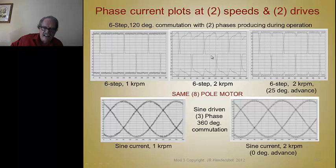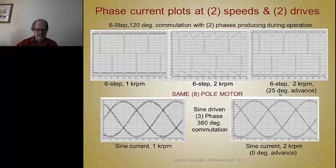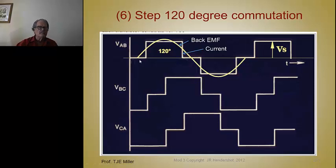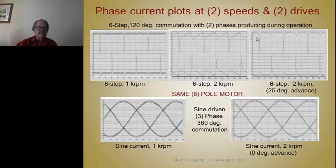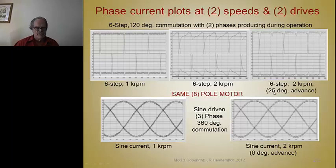I can fix that by phase advancing — what people call field weakening. I'm starting the commutation where the back EMF is actually negative — same polarity as the DC rail voltage — so I'm using some of the back EMF voltage added to the rail voltage to force current up almost square like it did before with PWM chopping. Then I switch to phase AC, and my average current is about the same as it was at half the speed. People call this field weakening, but it's really phase advance.